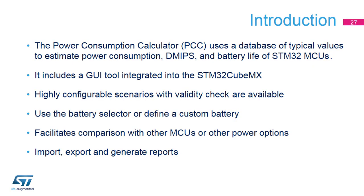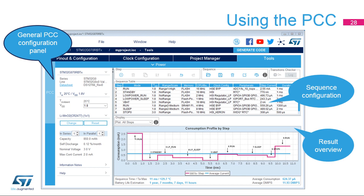The power consumption calculator can be used to estimate battery lifetime used as either main or supplementary power supplies. Sequences can easily be imported and exported, and illegal state transitions are detected too. It is even possible to compare sequence executions of two different MCUs and generate a report. The power consumption calculator is the fourth tab in the STM32CubeMX main window.